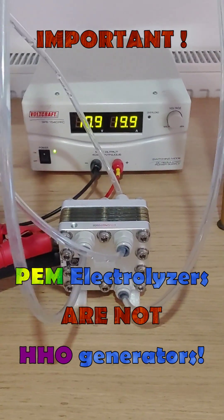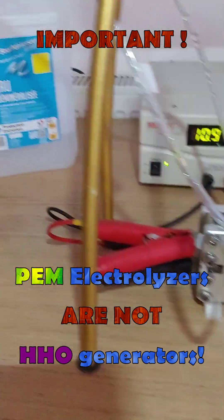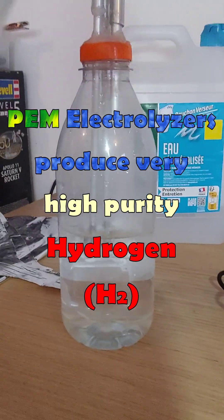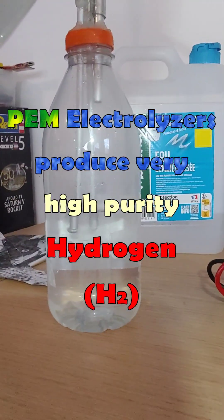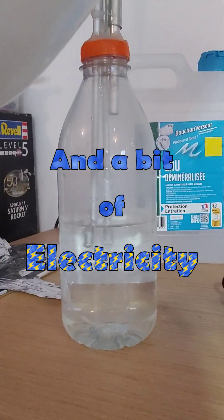Important: PEM electrolyzers are not HHO generators. PEM electrolyzers produce high-purity hydrogen. They use distilled water and a bit of electricity.